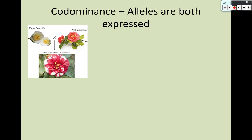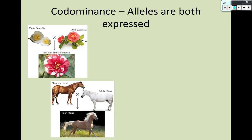Some examples of codominance are camellia flowers. Unlike snapdragons, if you breed a white camellia and a red camellia, you actually get a red and white camellia. There are also roan horses — a cross between a chestnut horse and a white horse. At first glance it looks like incomplete dominance, but if you look at the individual hairs, some are white and some are brown. Our eyes blend them into a tan color, but unlike hair texture, there are actually separate white hairs and brown hairs — that is codominance.